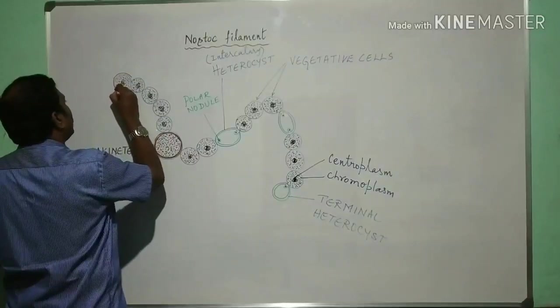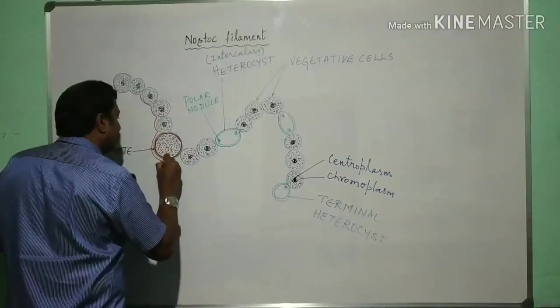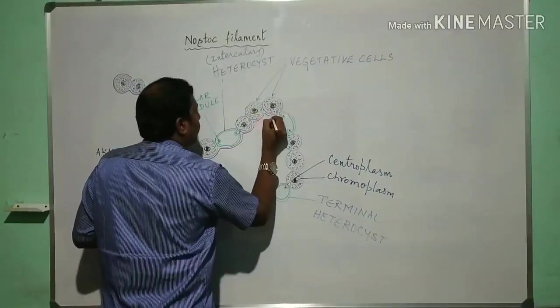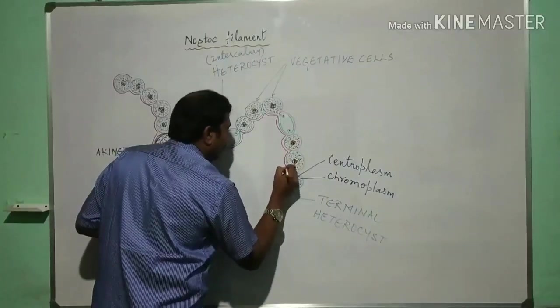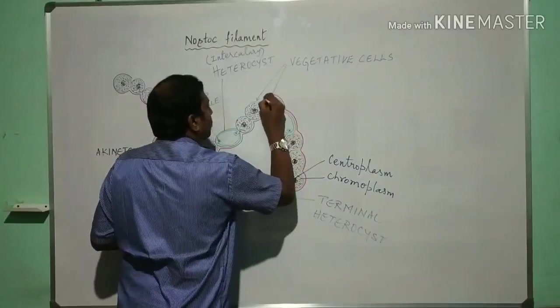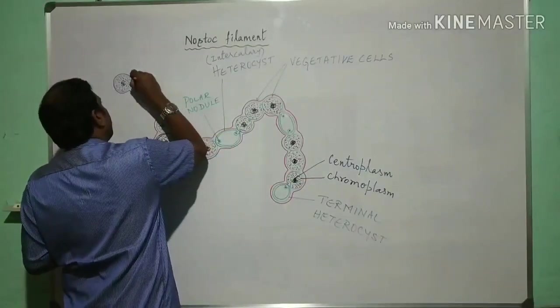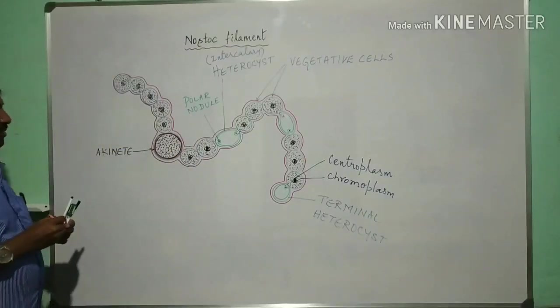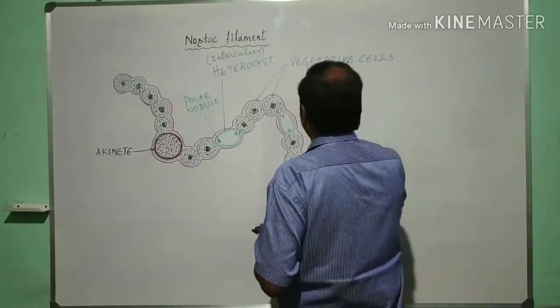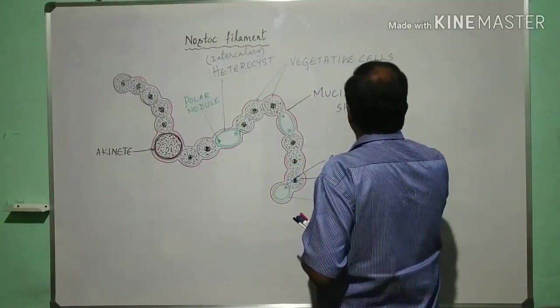This is just a thick mucilage covering, can draw it surrounding this. Mucilage retains moisture surrounding the filaments. Now I can label these as mucilage sheath.